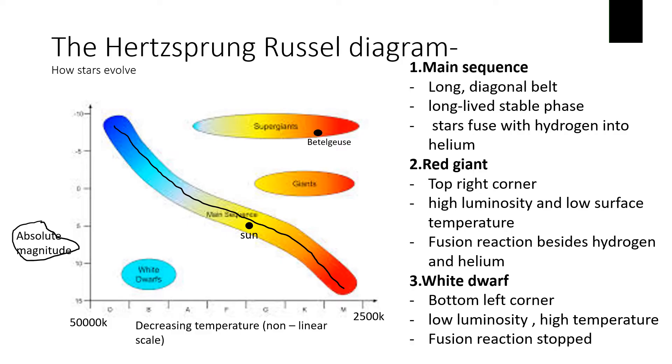Then people started to think that maybe stars moved along the main sequence. We now know that that's not true. These are the stars in the stable part of their life when they're converting burning hydrogen into helium.